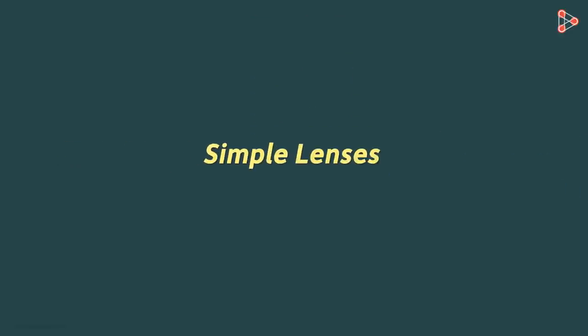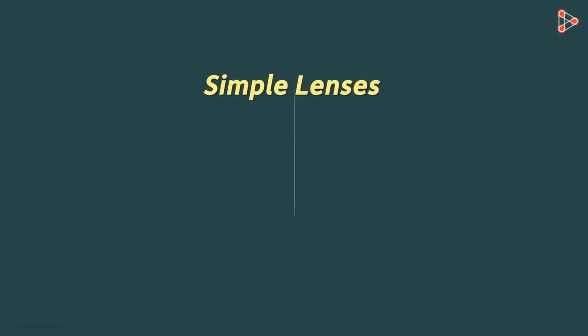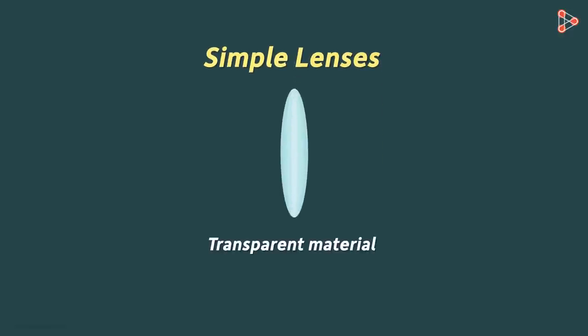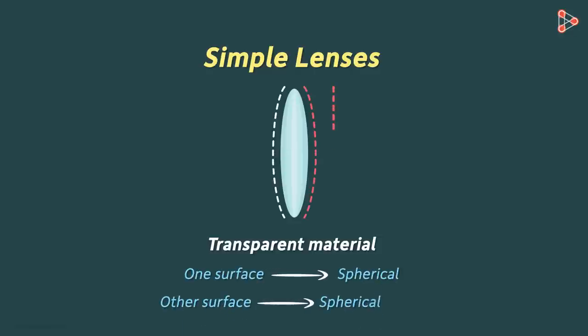What does a simple lens look like? A simple lens is a transparent material bounded by two surfaces, in which one of them is spherical and the other can be either spherical or plain. So one surface is definitely spherical, and the other can be spherical or plain.